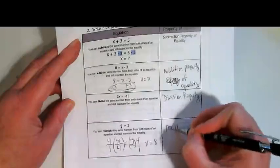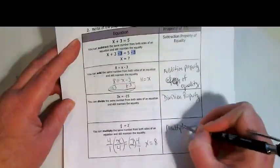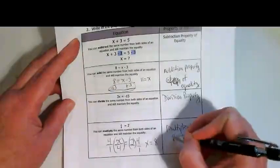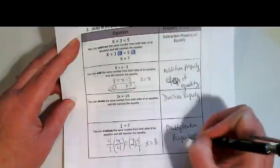That's using multiplication property of equality to find out what our variable is worth.